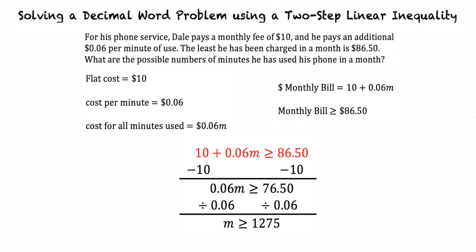We get our final inequality for m, which is that m must be greater than or equal to 1275. This means that Dale always uses at least 1275 minutes per month.